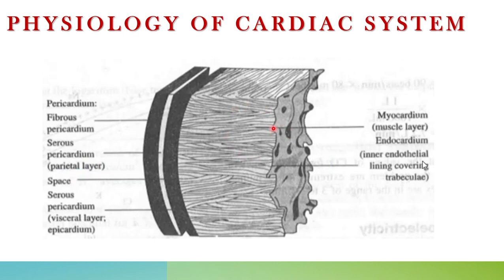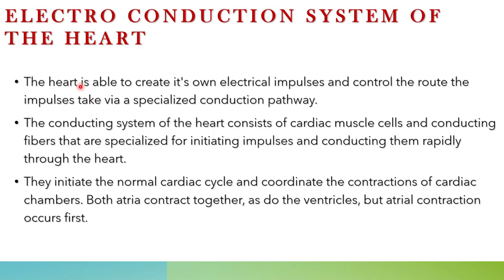The heart is able to create its own electrical impulse and control the route that impulse takes through specialized conduction pathways. The conducting system of the heart consists of cardiac muscle cells and conducting fibers specialized for initiating impulses and conducting them rapidly through the heart. They initiate the normal cardiac cycle and coordinate the contractions of the cardiac chambers.